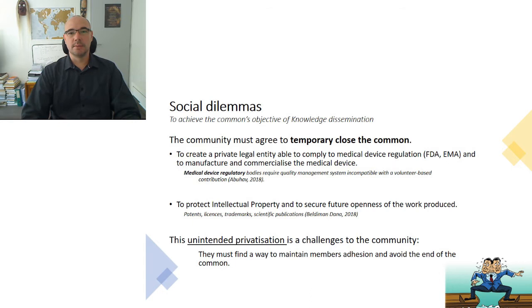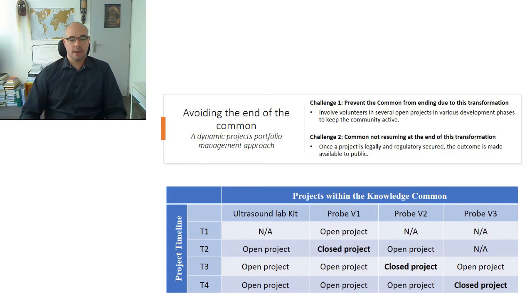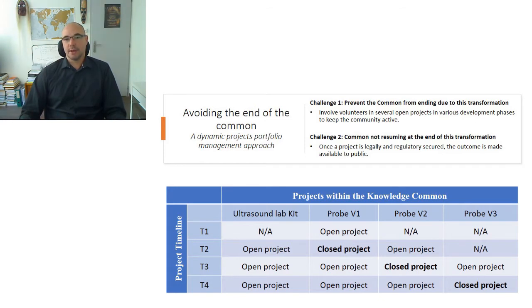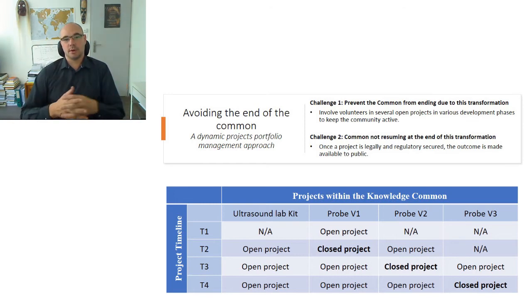Now I'm going to present the way forward and the result of the community's agreement in terms of answering these challenges. The community I followed had this very interesting approach to overcome the challenge of preventing the commons from ending due to the transformation — and basically preventing volunteers and community members from stopping work because the commons became private. What they've done is they've created a separate project, fully open for educational purposes: the ultrasound lab kit. They said to the volunteers: now we have to work on the industrialization part of making the probe, you have to create a private entity, so now you can work on this educational project.